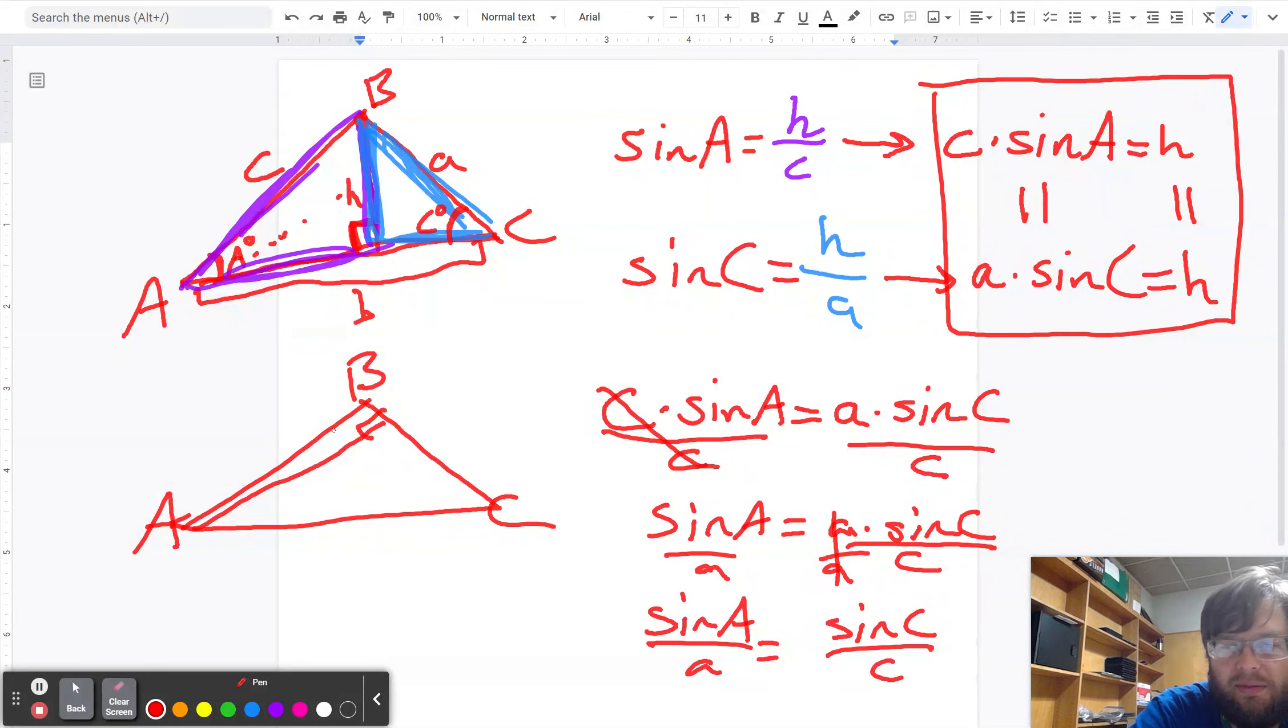if instead I drew like this and hit this at a right angle there, then I could find the, I could relate B and C. Or if I had drawn it starting from A over here at a right angle like that, then I could relate A and B.